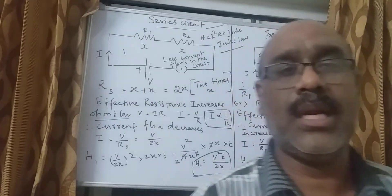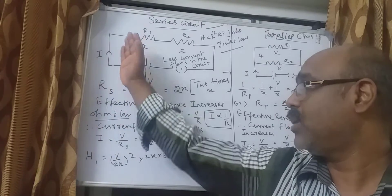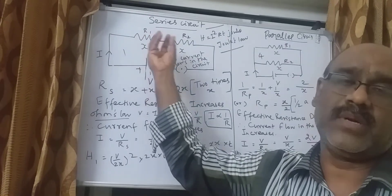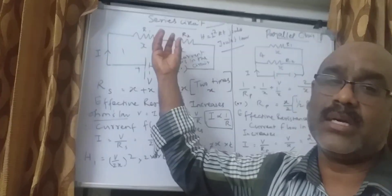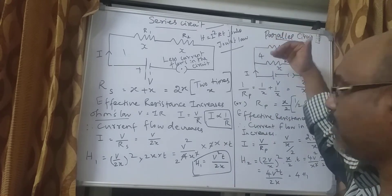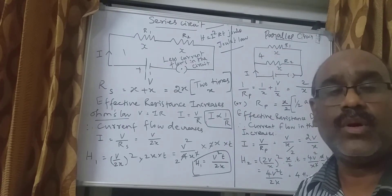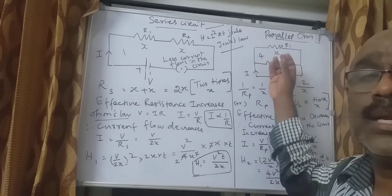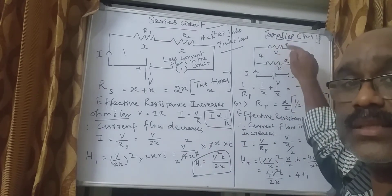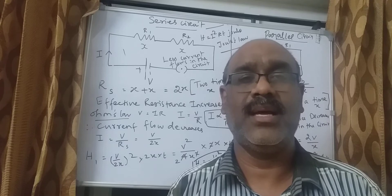In day-to-day life, we can take the serial set bulb as an example — only a small amount of current flows in that circuit. Whereas in a parallel circuit, appliances are connected in parallel to each other, increasing the current flow, so each appliance receives the current it needs for its working according to its resistance. I hope you all have enjoyed this class. Thank you for watching and let us meet in the next class.